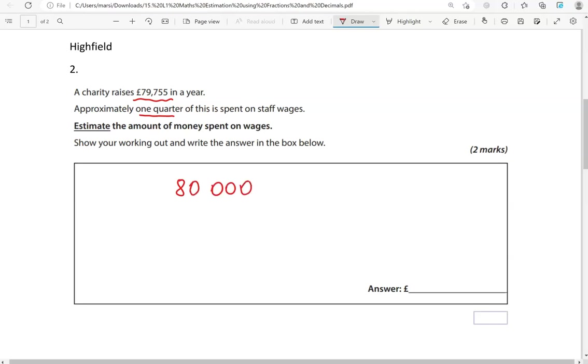So what is a quarter of £80,000? Well, half is £40,000. So a quarter will be half of the half, which is £20,000.